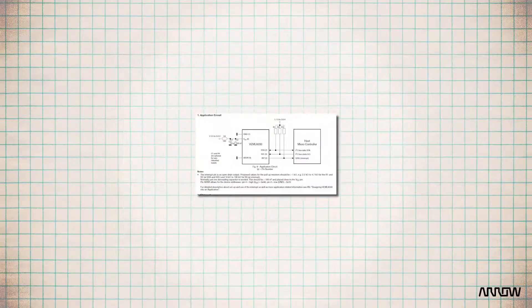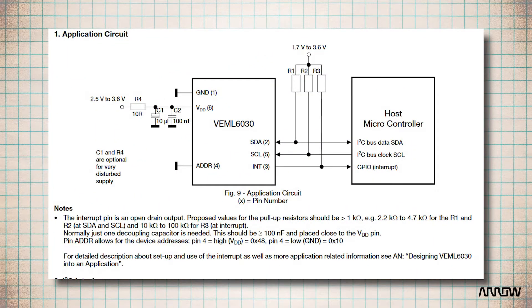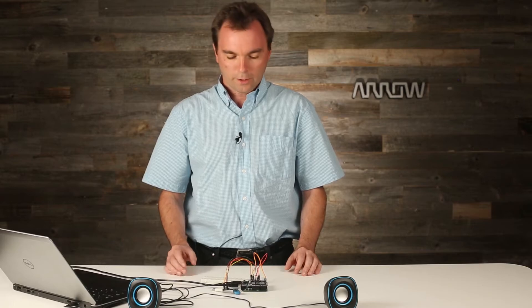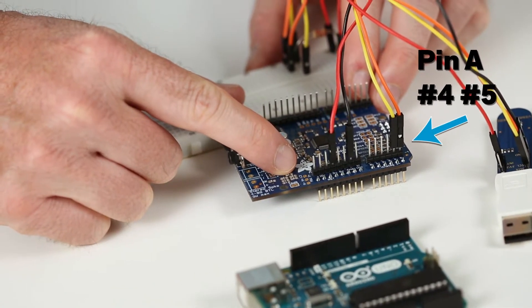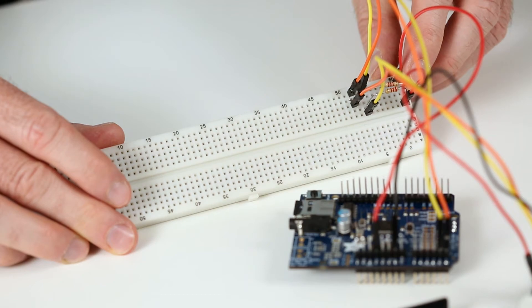It was designed by Philips, called NXP today, and works with only two lines. One line for the clock, called SCL, and one line for the data, called SDA. This last line is bi-directional. These two lines are open-drain and need pull-up resistors connected to pins A4 and A5 of the Arduino — the pull-up resistors here that we put on the breadboard. Obviously, on a final application, you design these resistors on your own board.